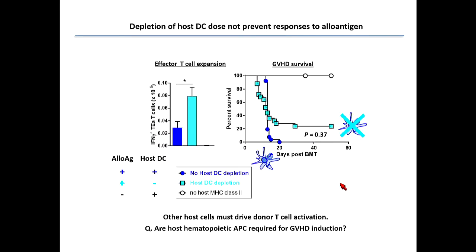Then we wanted to know which cell type of the host APC is important. Putatively the host DC is important. So we compared host DC depletion versus non-DC depletion using the CD11c-driven diphtheria toxin receptor-expressing recipient with diphtheria toxin induction administration. Surprisingly, host DC depletion increased effector T-cell expansion compared to the non-depletion. And in survival there is no difference — finally no difference. This means depletion of host DC hematopoietic APC does not prevent the response to the antigen, so other cell types must drive the donor T-cell activation.